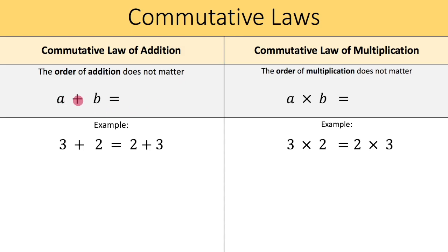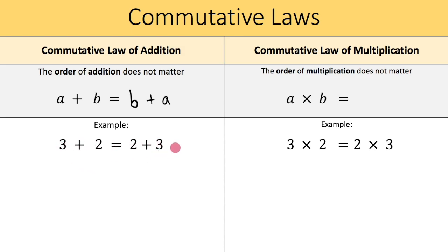So a plus b equals b plus a. Make sure you write down these notes with me. Let's now go through an example: 3 plus 2 equals 2 plus 3. Well, 3 plus 2 is 5, and 2 plus 3 is also 5. So yes, this is true — the commutative law of addition works.